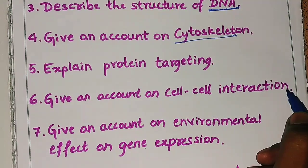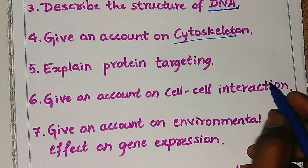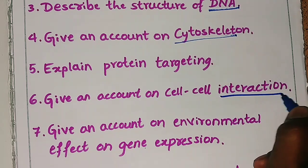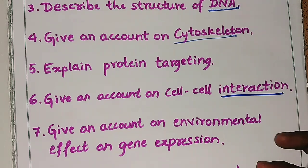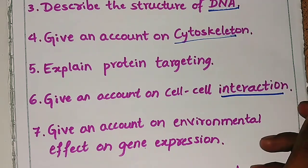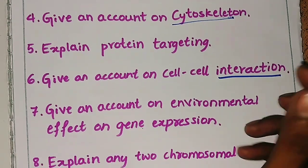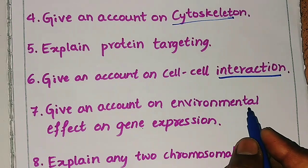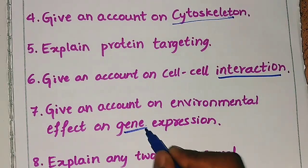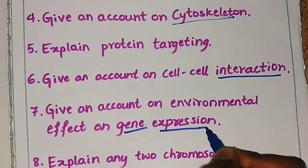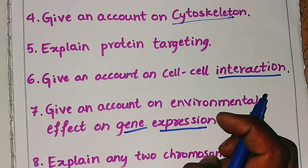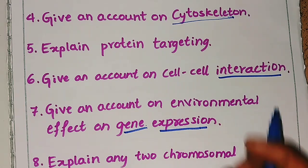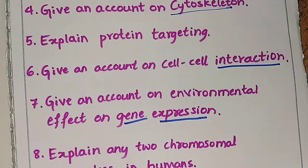The sixth question is: give an account on cell-cell interaction — it is a very important question. The seventh question is: give an account on environmental effect on gene expression. The topic of gene expression is hard to learn, but try to understand and remember the key points to write.